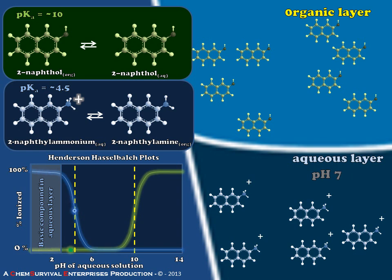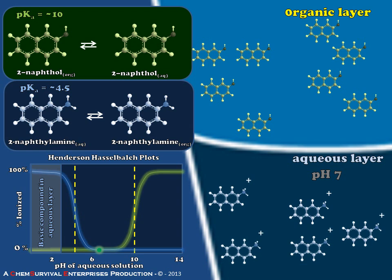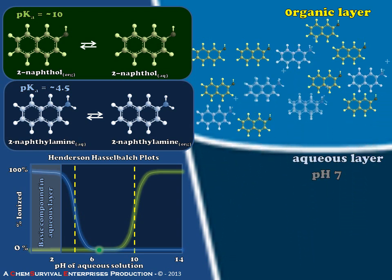If we move to that pH that worked so well for us last time, about 7, what we see is that we've reached a point where we're no longer dealing with charged naphthyl ammonium ion, now we're dealing with naphthylamine, which of course is going to partition more strongly into the organic layer. So at the pH that worked for us last time, we now have a very poor separation. This is a suboptimal extraction system for the compounds that we're dealing with right now.